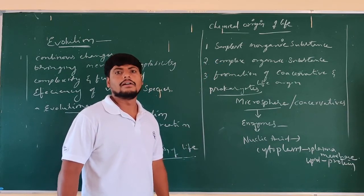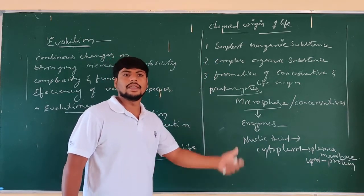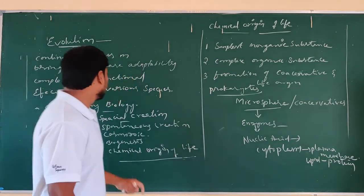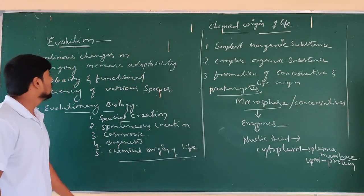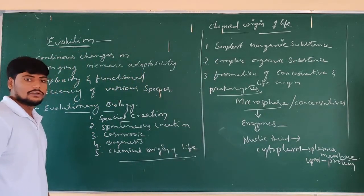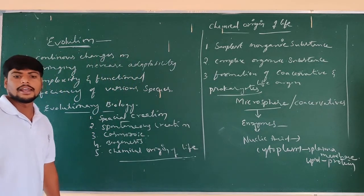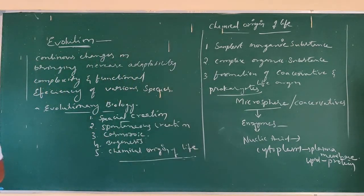In this way, Miller experimentally proved the chemical origin of life theory, and we can see that this covers another important concept — the evolution of organisms on the Earth.